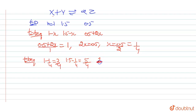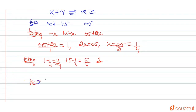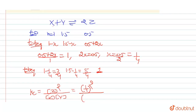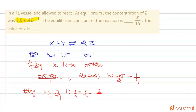The equilibrium constant Kc is given as x by 15. The expression of Kc is concentration of z squared upon concentration of x times concentration of y. Concentration of z is 1 upon 1 liter, squared. Concentration of x is 3 by 4 moles upon 1 liter. Concentration of y is 5 by 4 moles upon 1 liter.